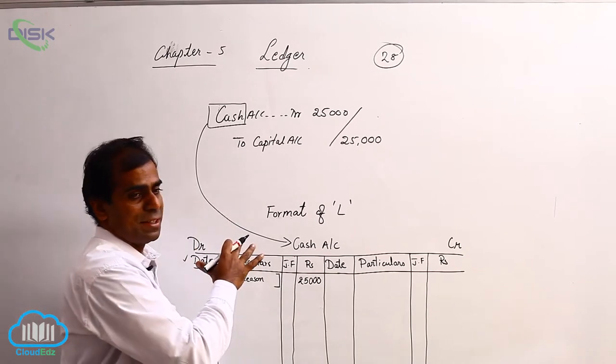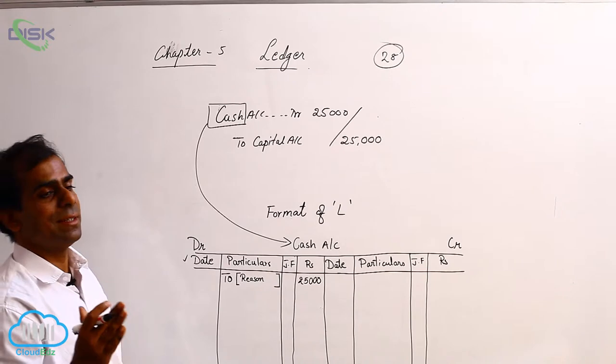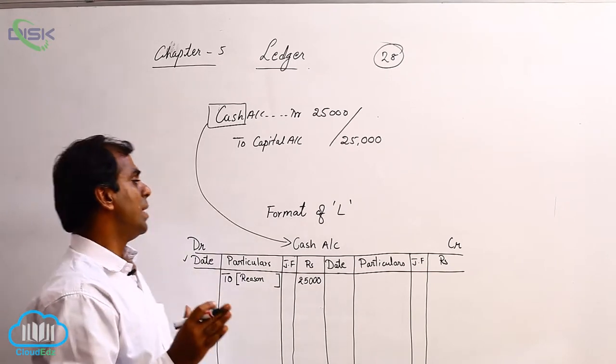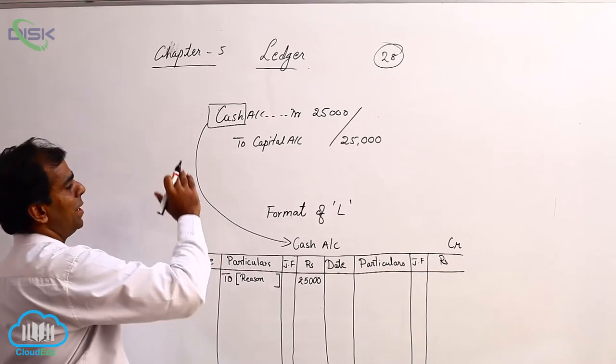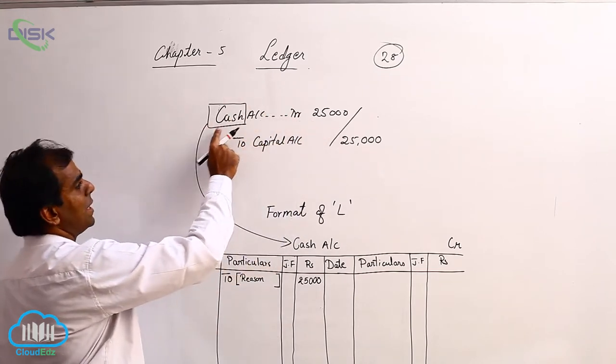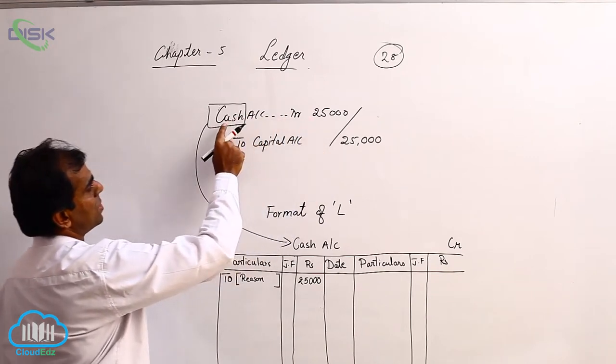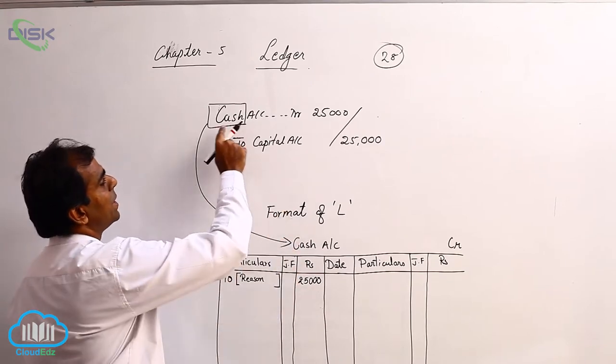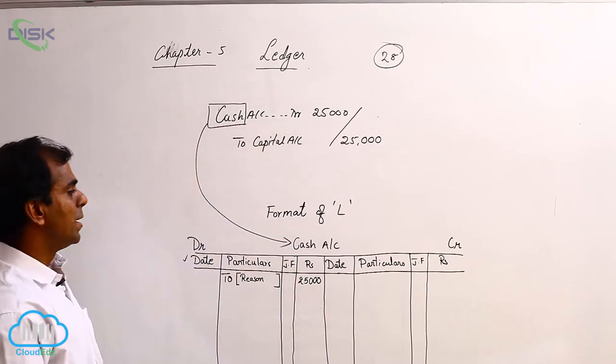Why I am stressing this is, when you post compound entries later, you will get confused. To avoid that, remember, if 25,000 is against cash, that 25,000 only should come in this cash account, in the debit side, because the cash is debited in the journal entry.